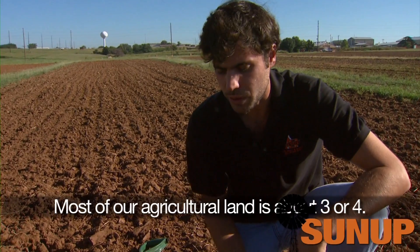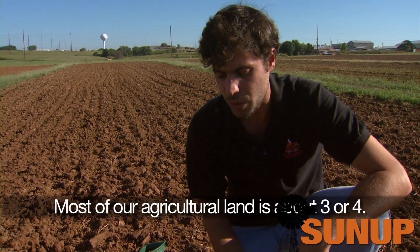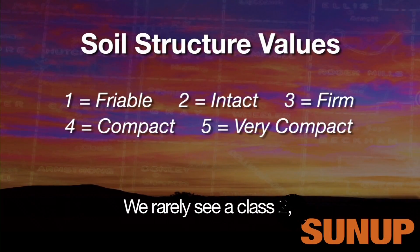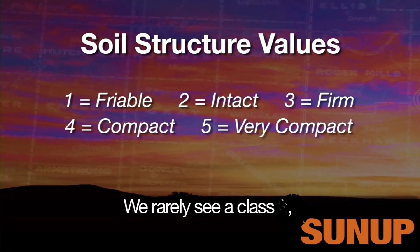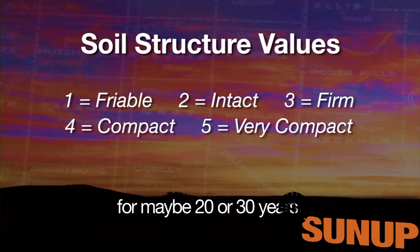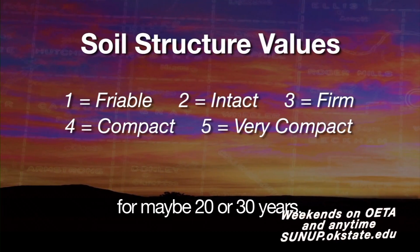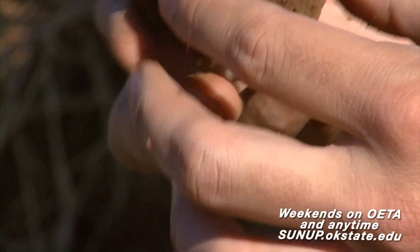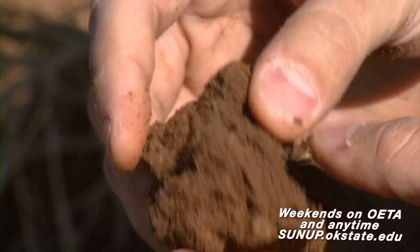A classification of three is actually what usually happens in agricultural land. Most of our agricultural land is about three or four. We rarely see a class two unless it has been in no-till for maybe 20 or 30 years. Then Patrignani moves on to the second layer.